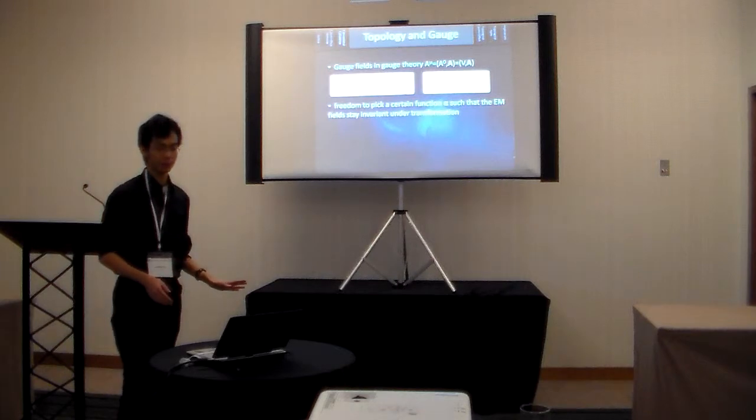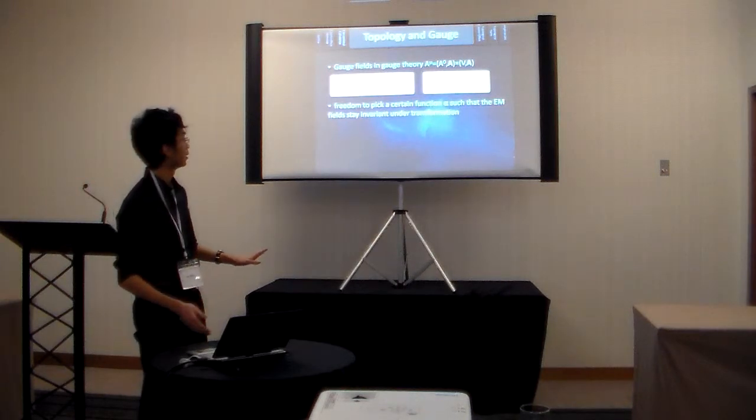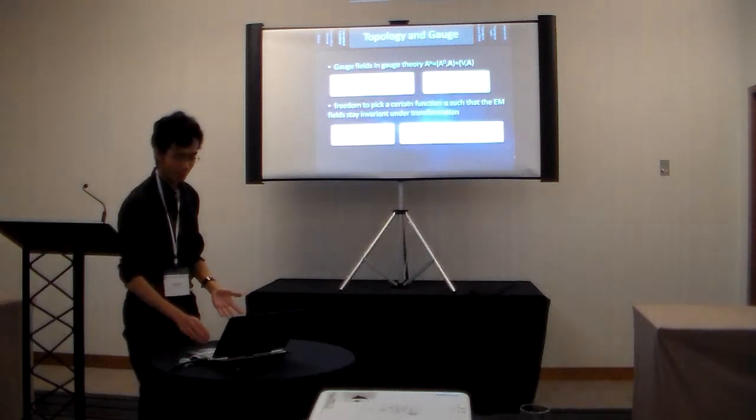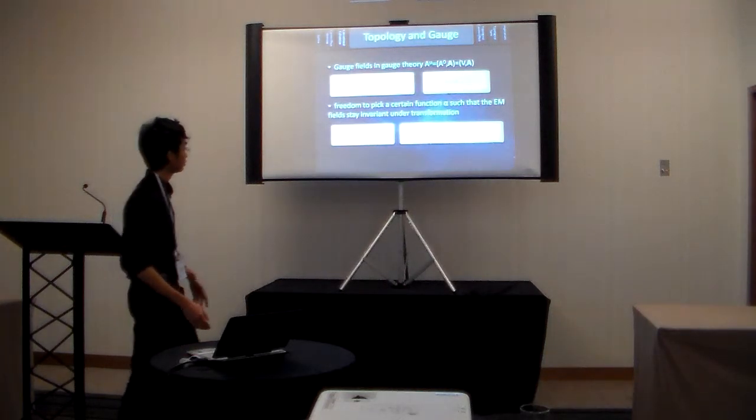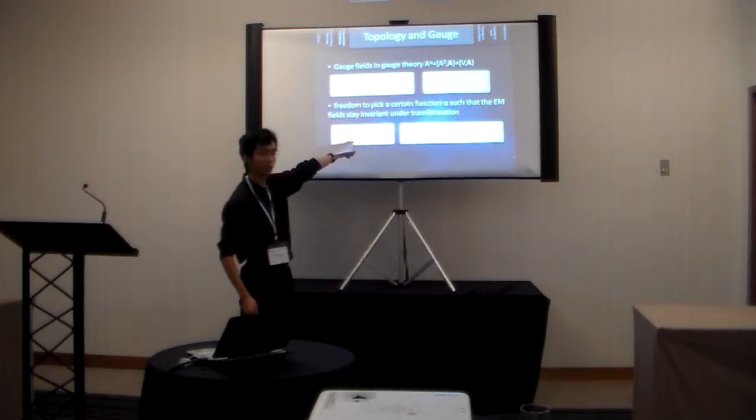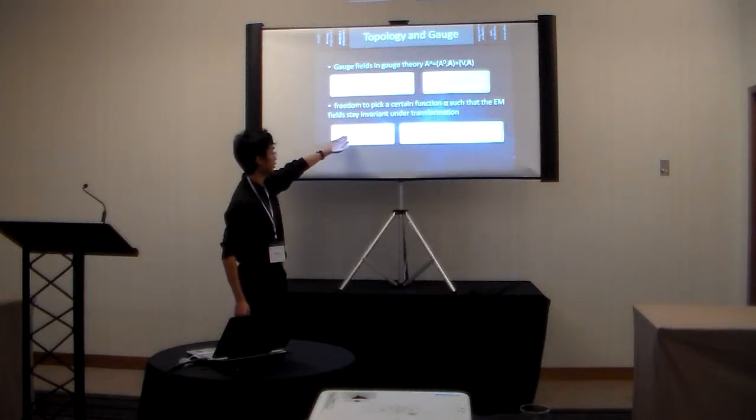Now it turns out if we use this gauge field, there is a certain degree of freedom that we can use. So essentially, what happens is that we pick a certain function, alpha, and we add the gradient of alpha to our old gauge field, and we make a new gauge field, A prime.